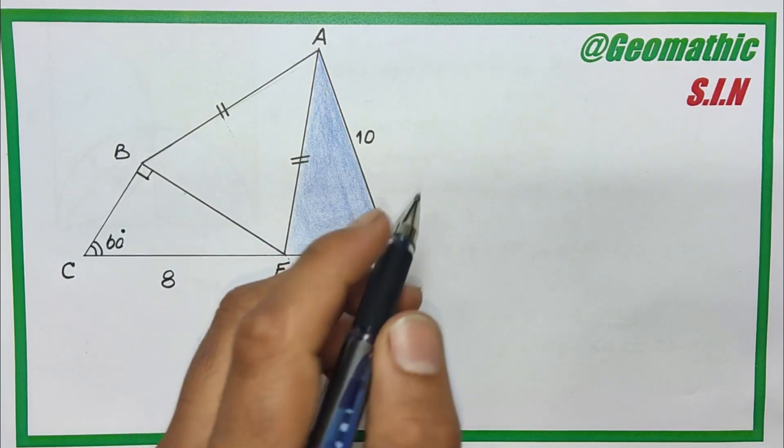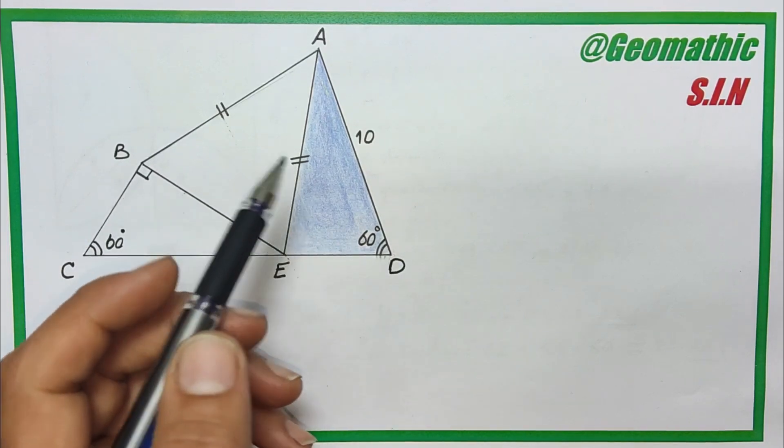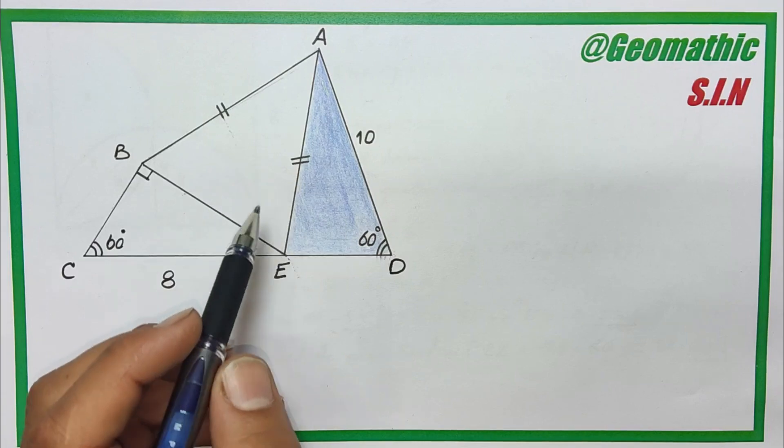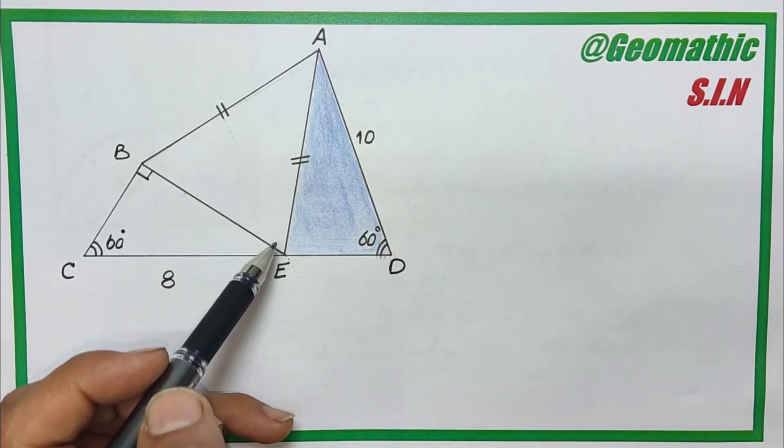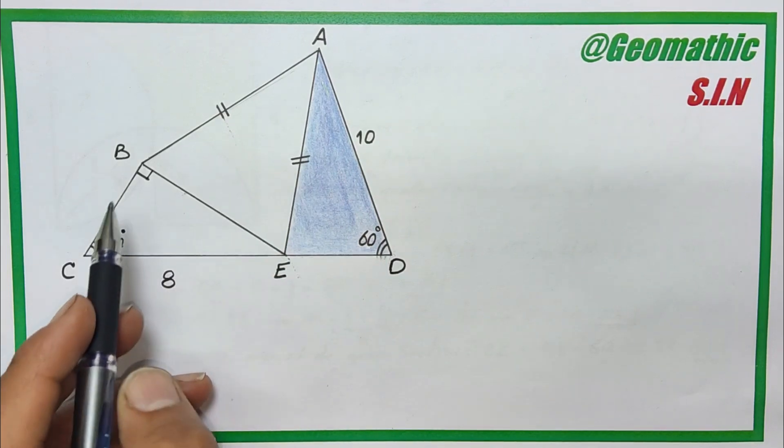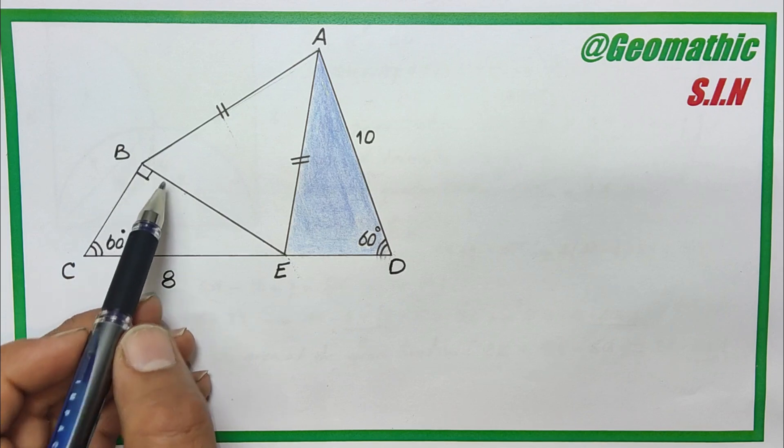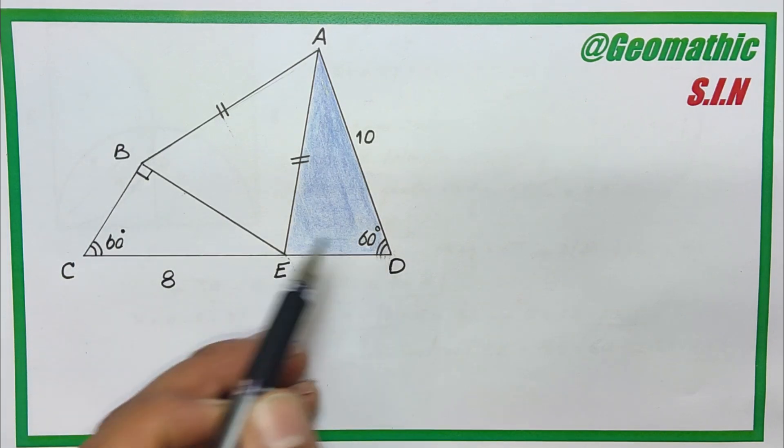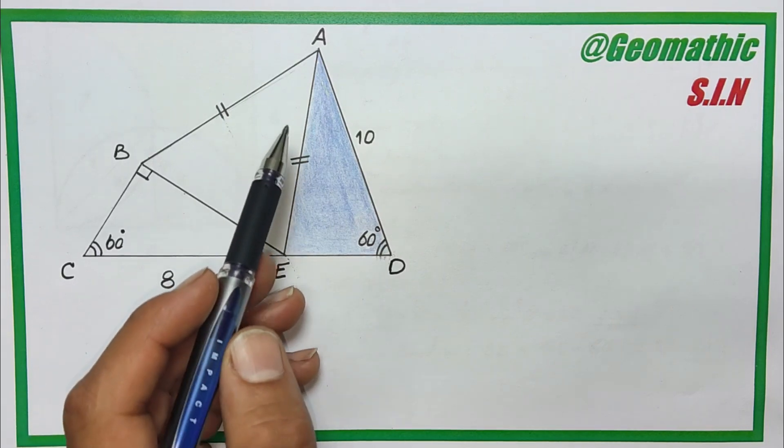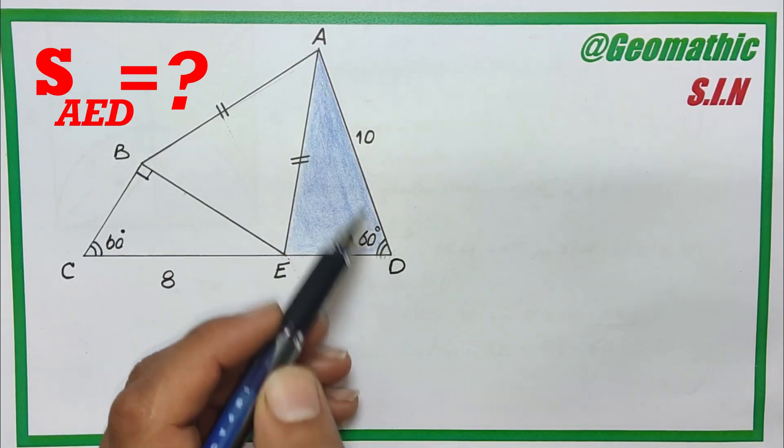Hey everyone, welcome to Geomathic. Here is another beautifully tricky geometry problem, a real olympiad style question. We have a polygon with some given information: AB and AE are equal, AD is 10, CE is 8, and there is a right angle at B. The angles at C and D are both 60 degrees. The question wants us to find the area of triangle AED, the blue section.